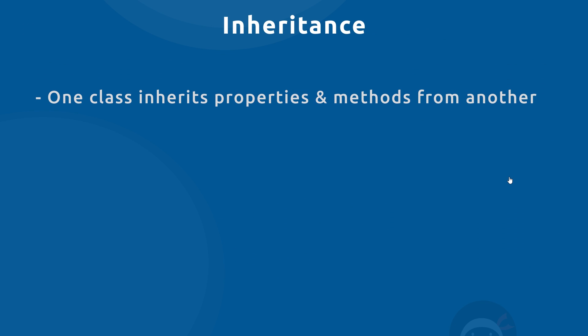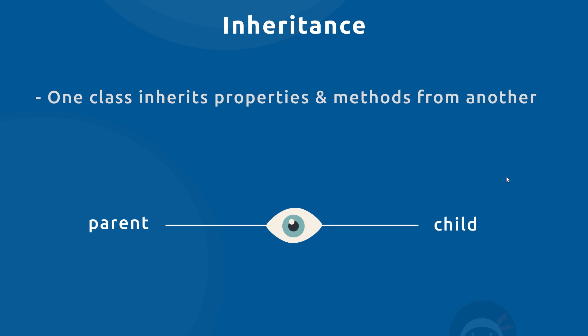The next big topic is inheritance, which is a pretty simple concept in programming once you get your head around it. In a nutshell, inheritance is when one class inherits properties and methods from another class — a bit like in real life, a child inherits properties from a parent, like eye color or skin color. That new class could also have additional unique properties of its own.